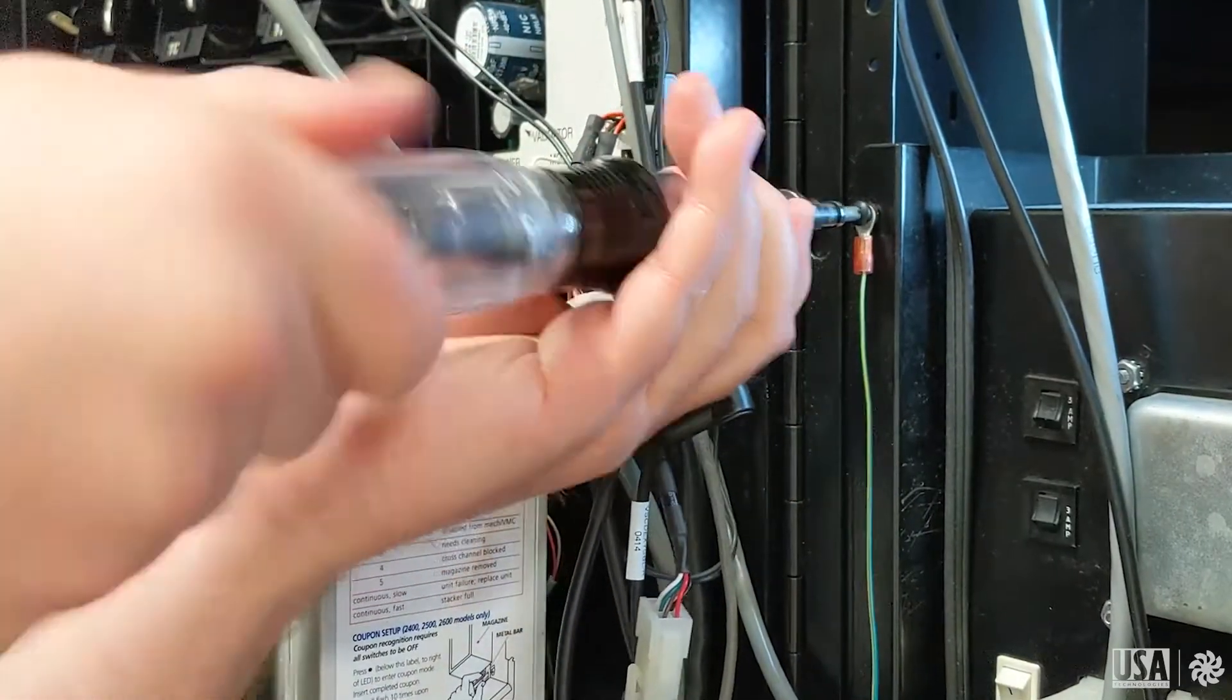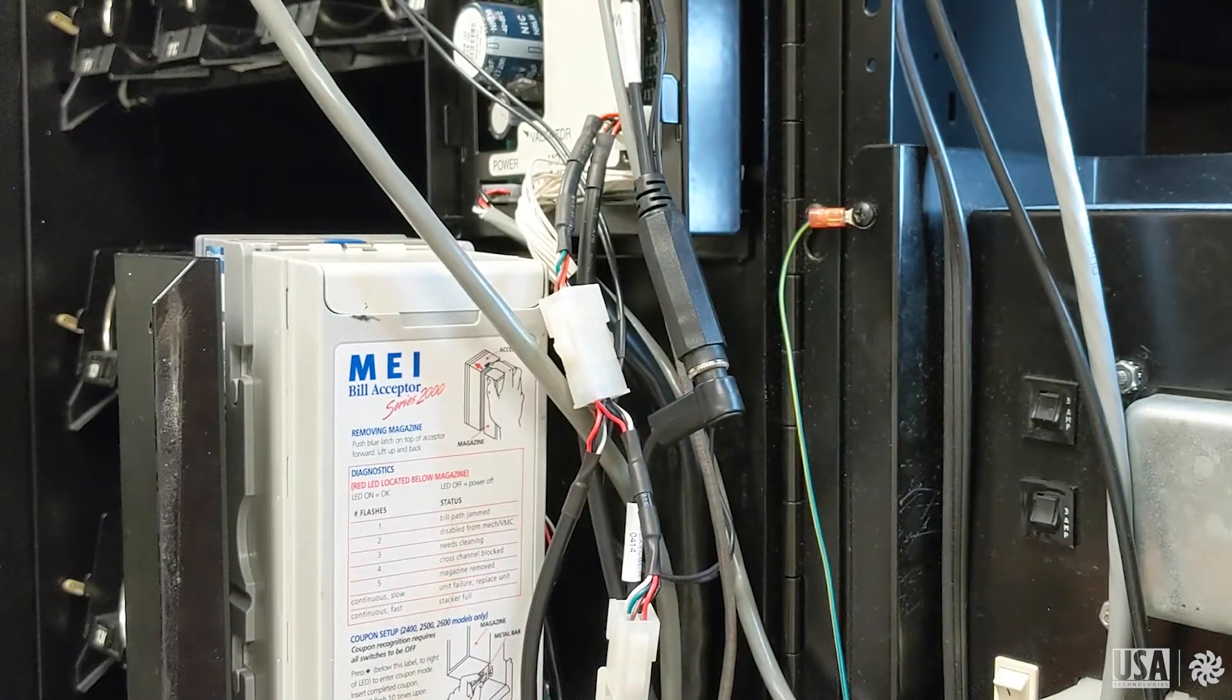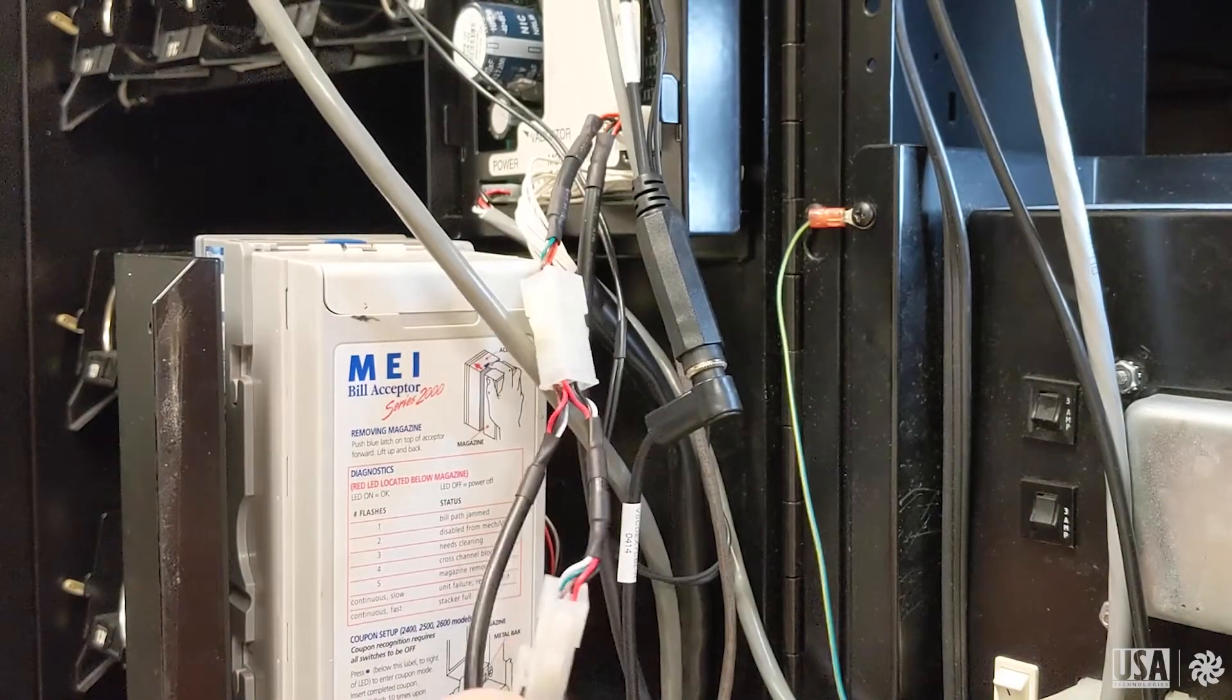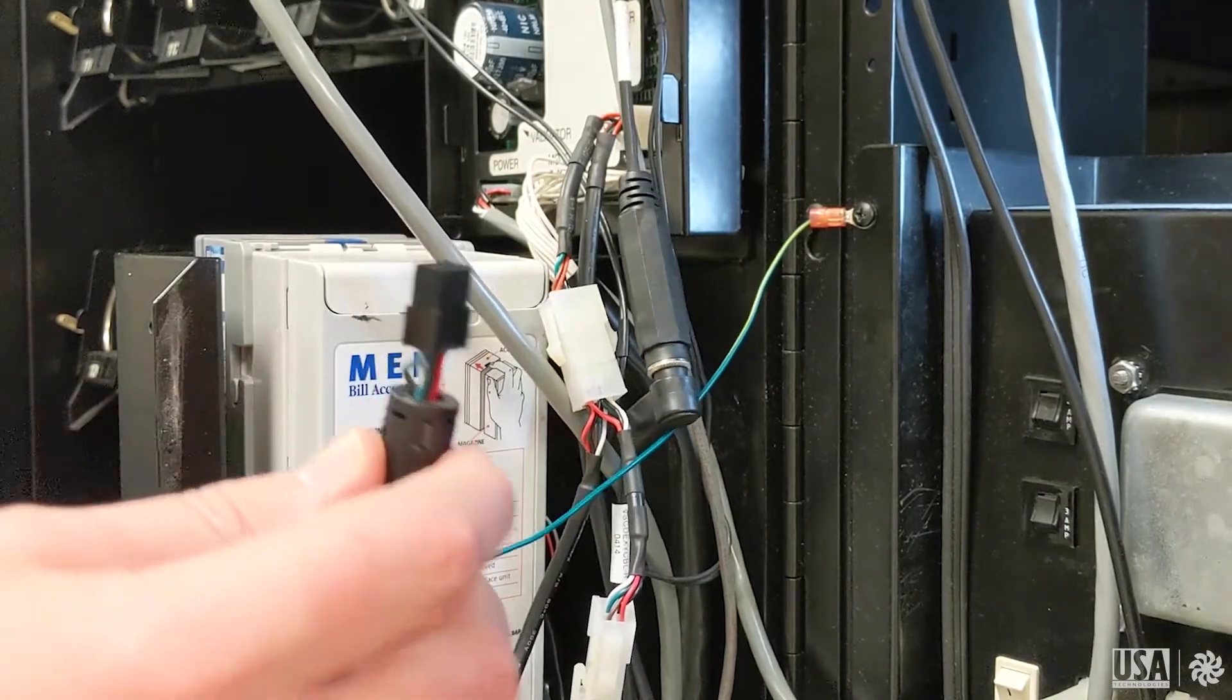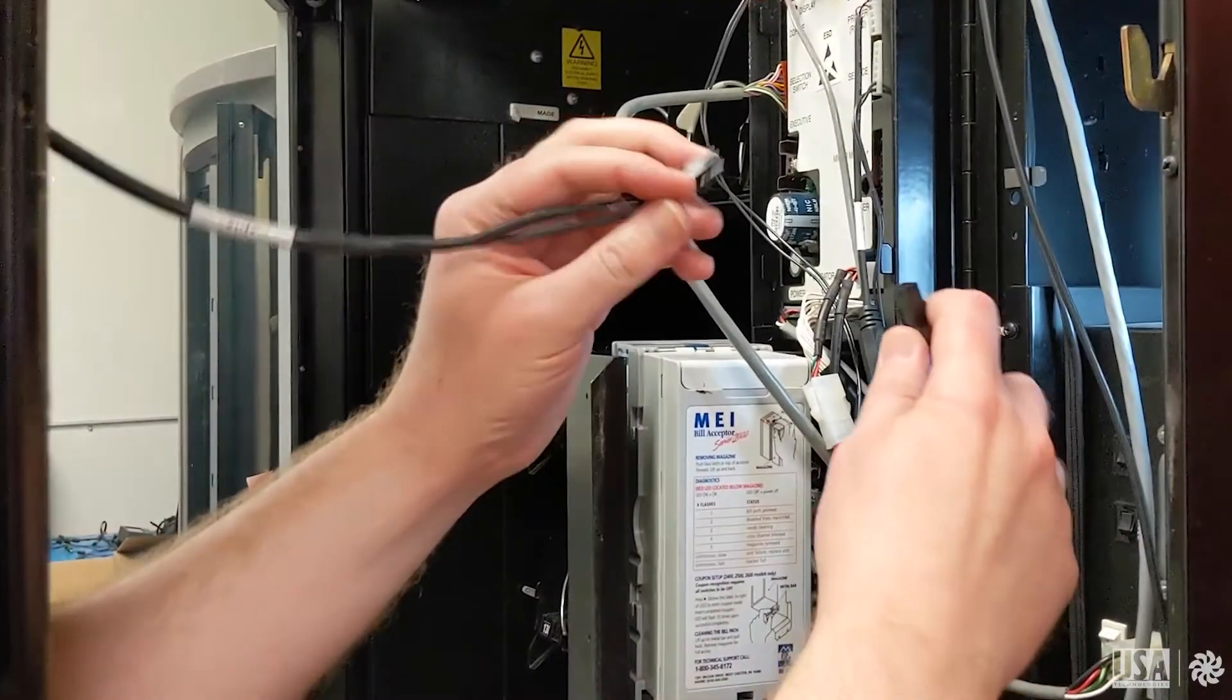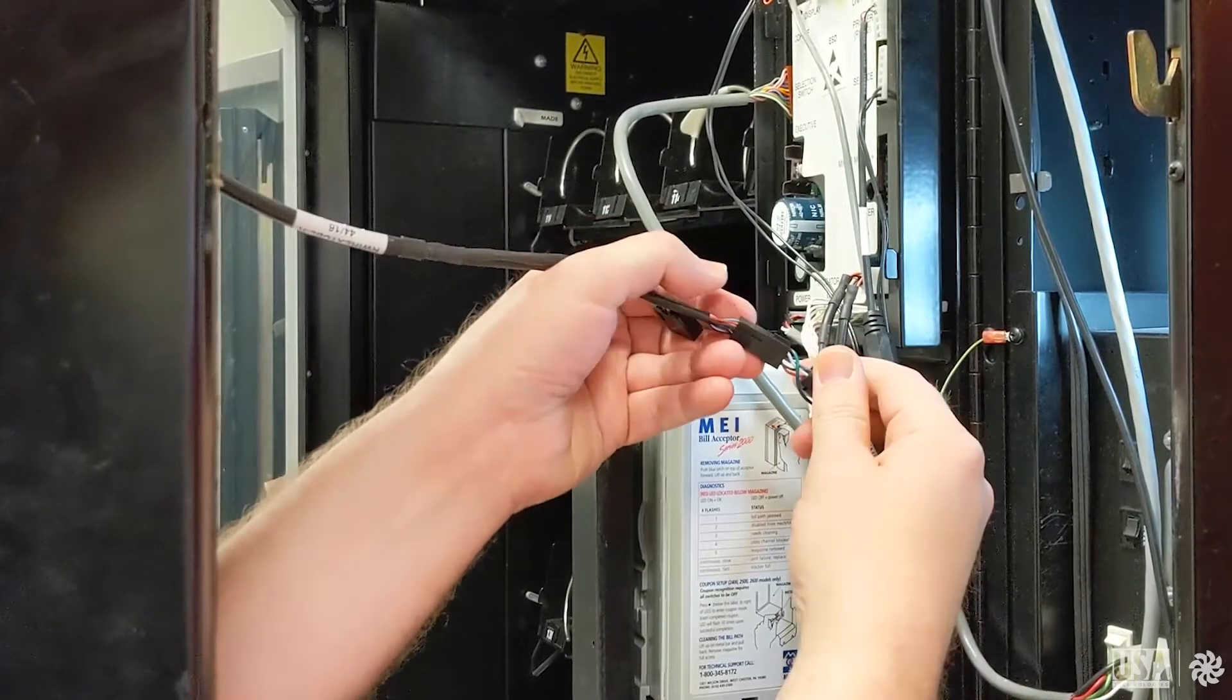Next, we'll want to connect the MDB lead to the interactive unit. In some instances, you may need to purchase an extension cable for the interactive unit so that the door can open all the way when a technician visits. As you'll see, this lead and the lead coming off of the unit itself are quite short, and on this type of machine, the door would not be allowed to swing open all the way once the technician arrives. They would instead need to power down and disconnect the unit before restocking the machine.